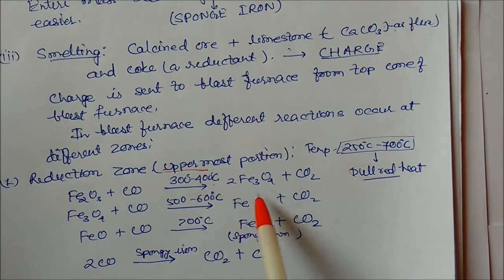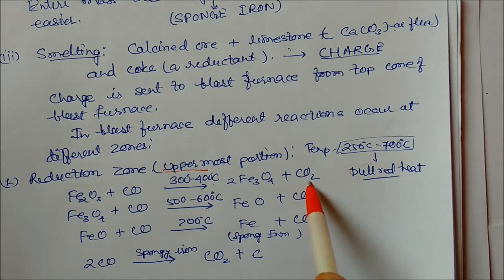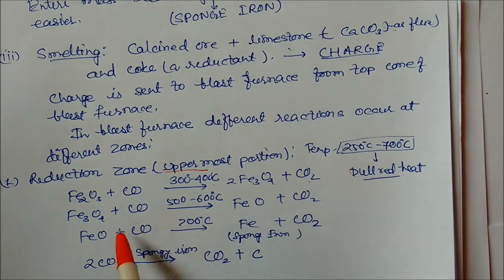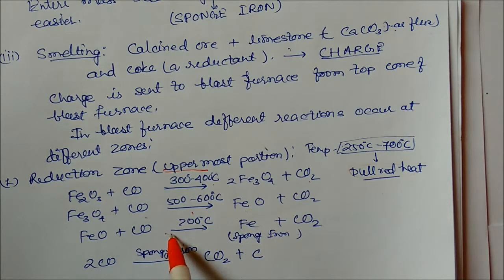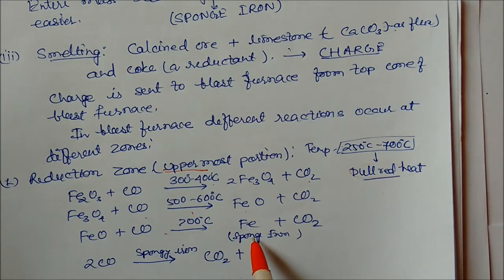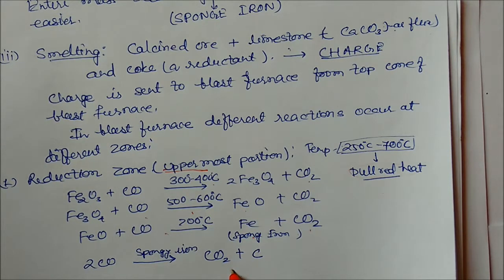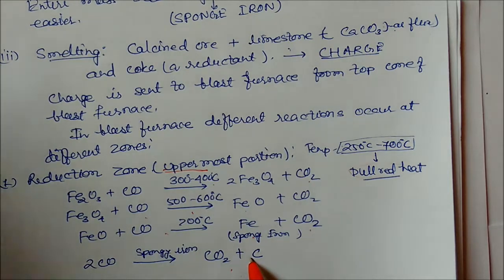Fe2O3 is reduced by CO to form Fe3O4 plus CO2. Fe3O4 is again reduced by CO at higher temperature to FeO plus CO2. Again, FeO reacts with CO to give sponge iron plus CO2 at 700 degrees centigrade. Then CO plus sponge iron gives CO2 plus carbon.